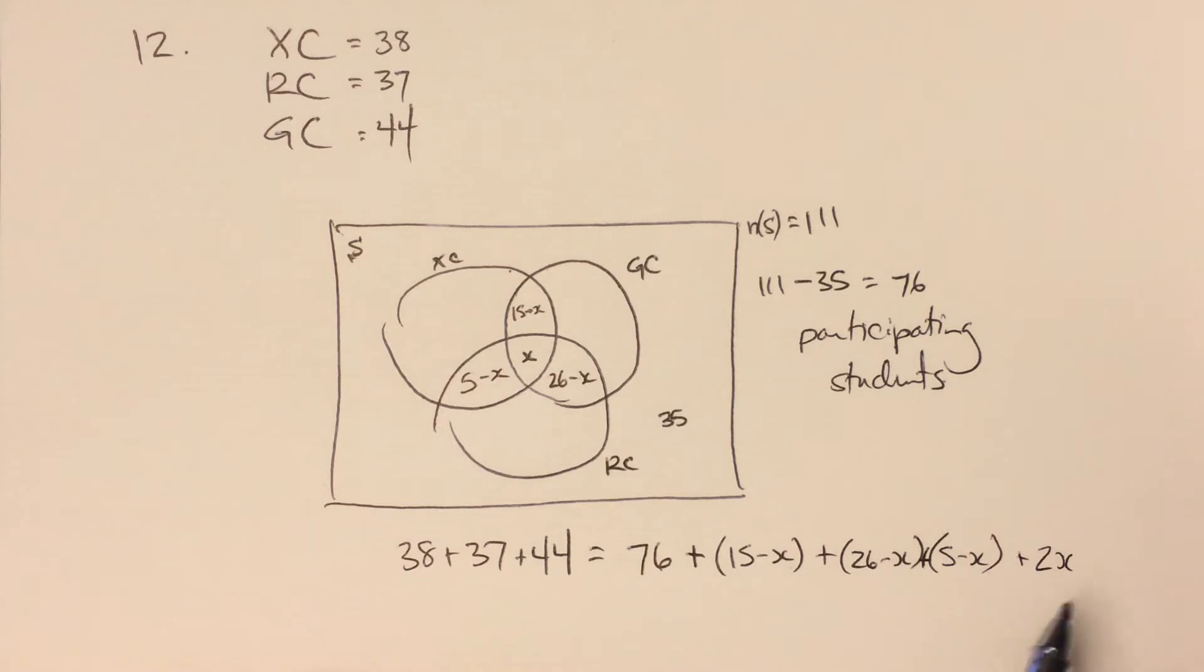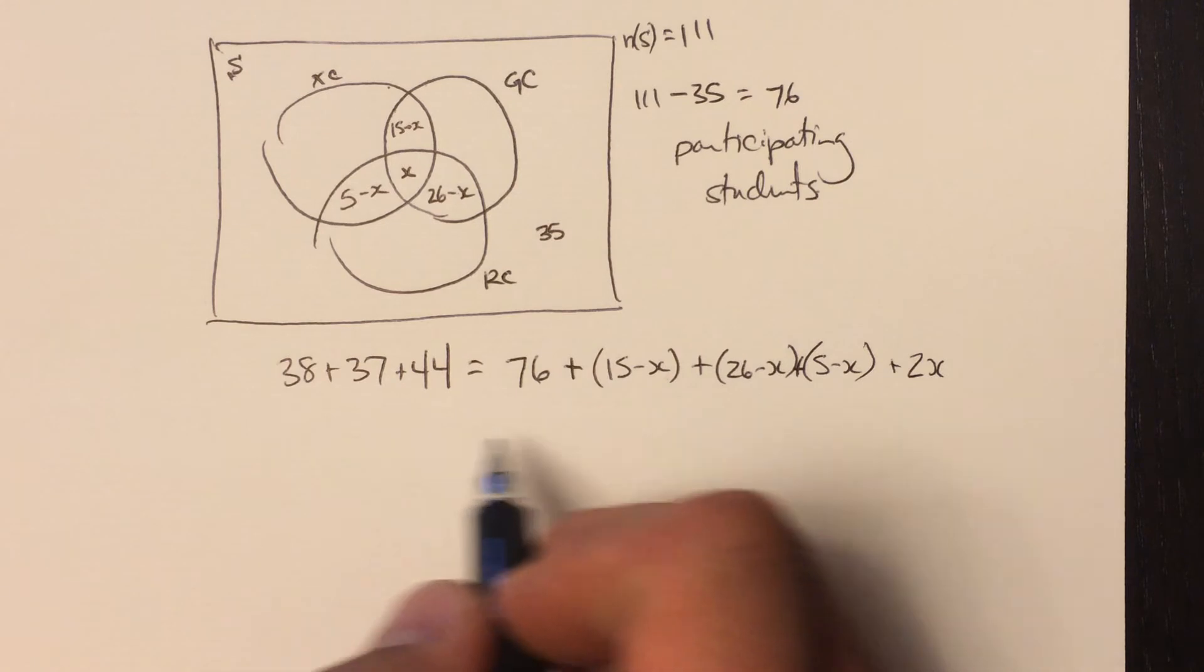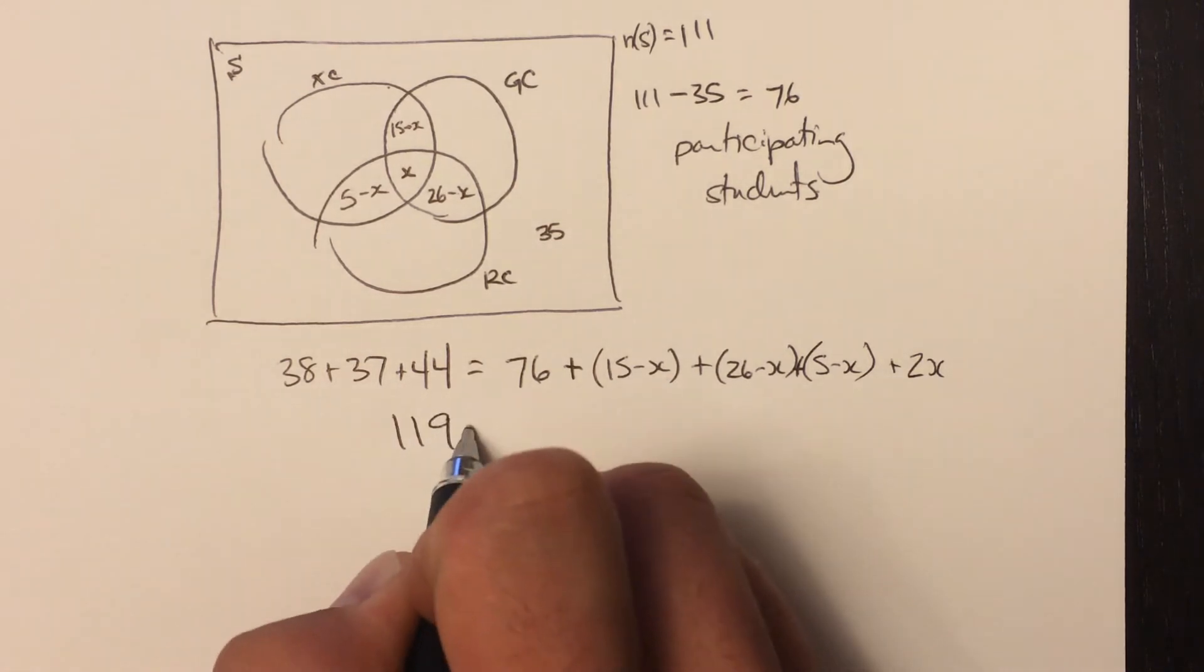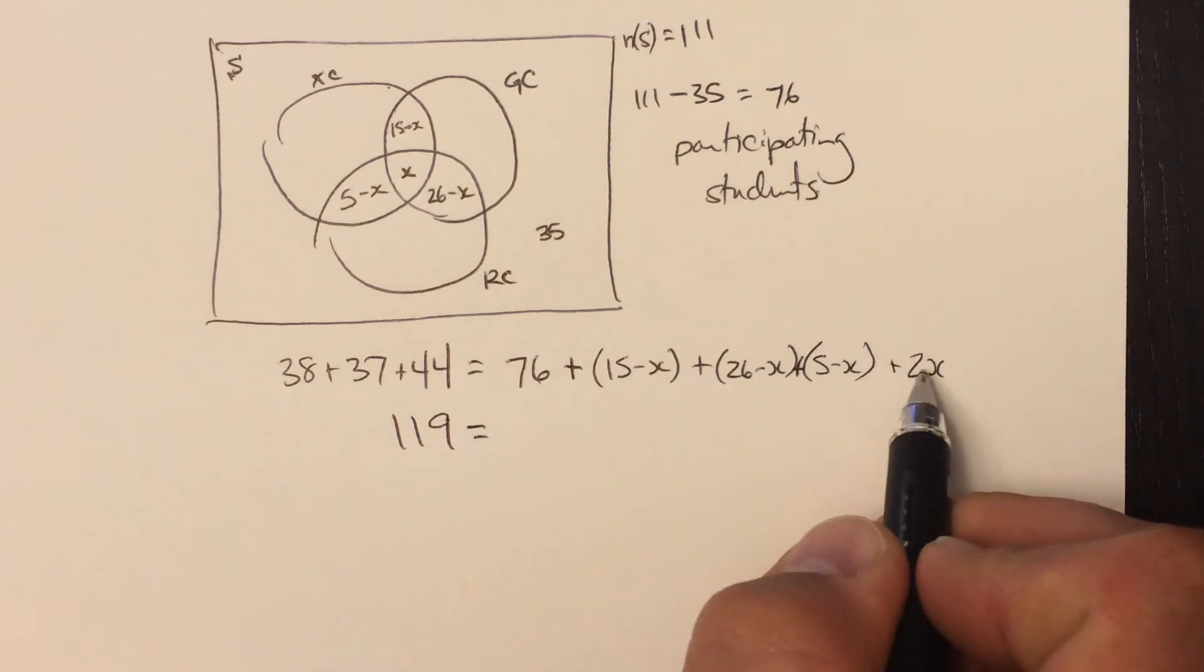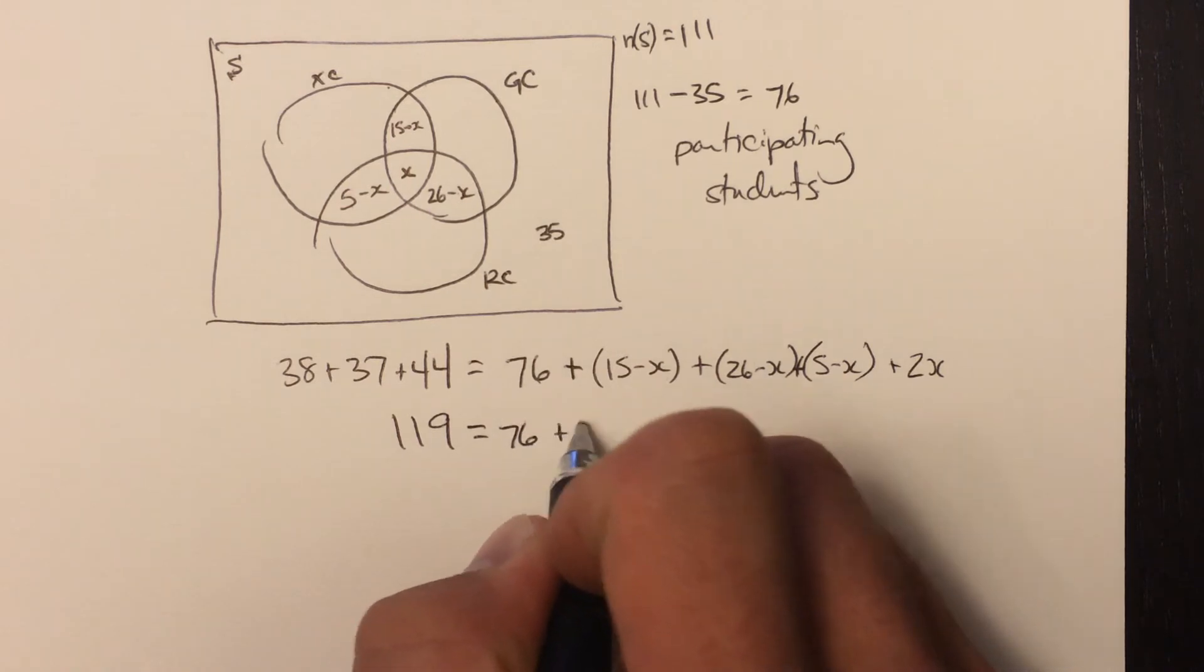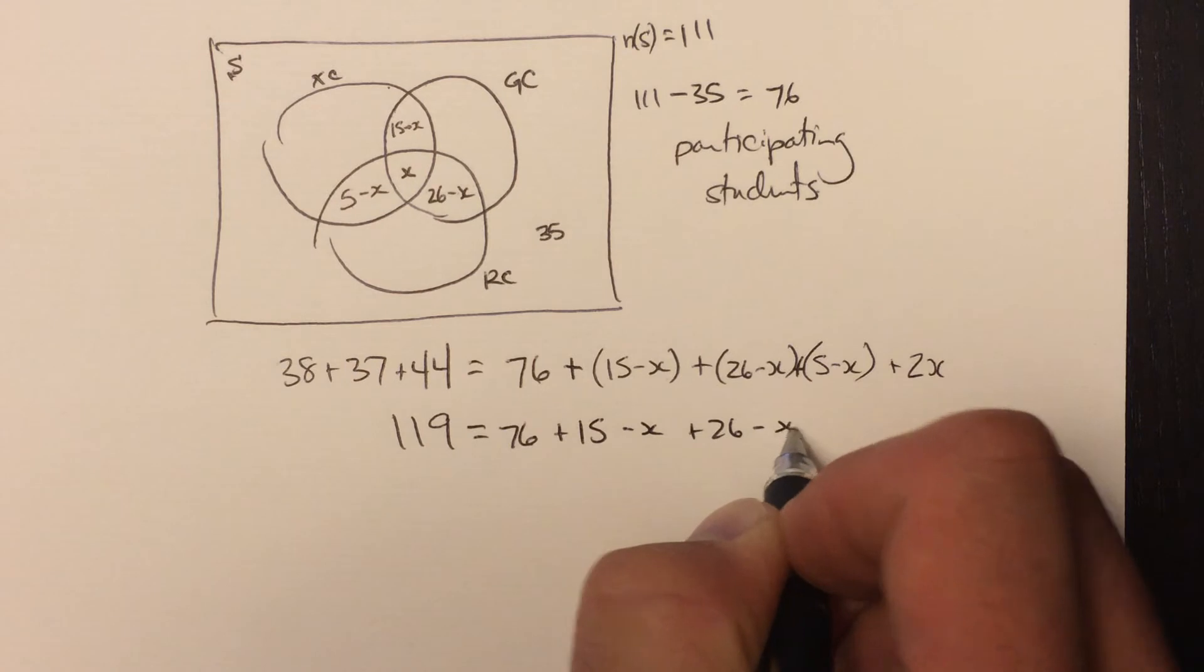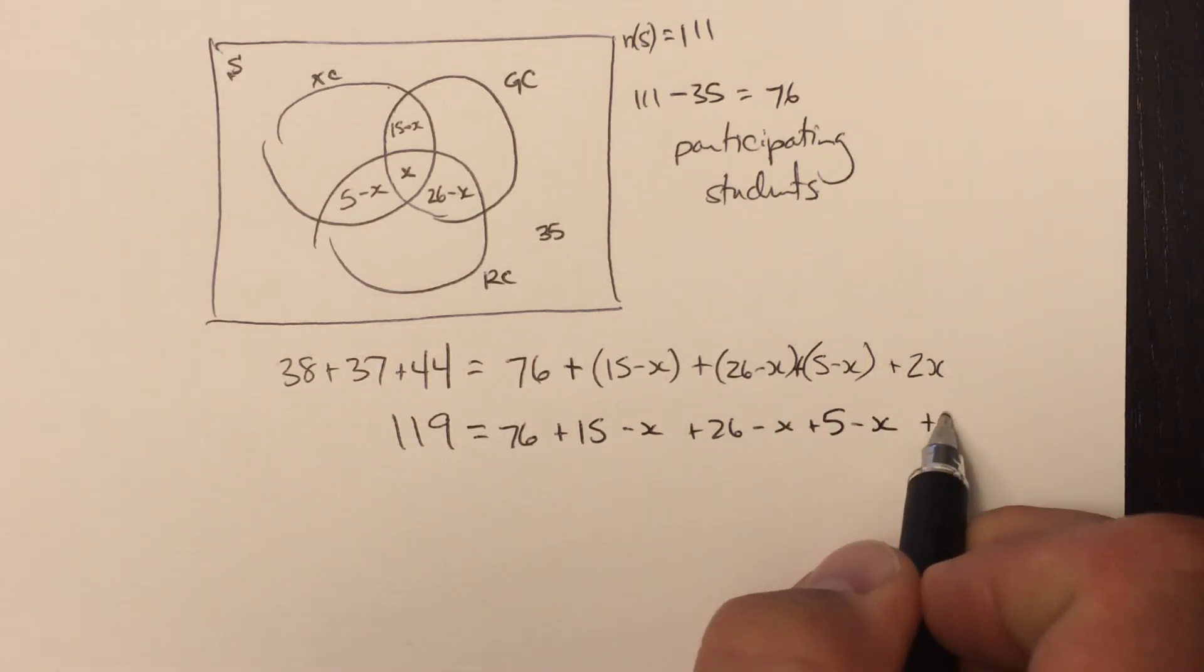Let's get a little close to the edge of my page here. I'm just going to move up now because I think we can do this all pretty quickly. So this value here, add that up, that's 119. And here, 76 plus all this. Well, we better expand all this out here so that we see what our value is. 76 plus 15 minus X plus 26 minus another X plus 5 minus another X plus 2X.